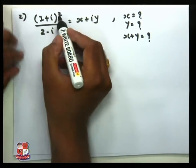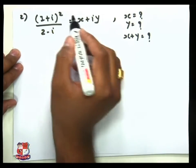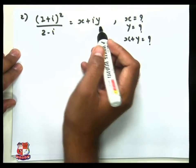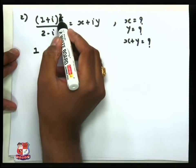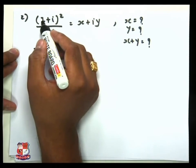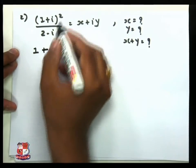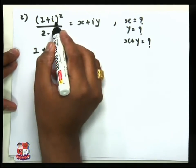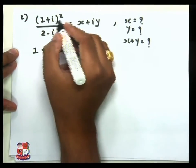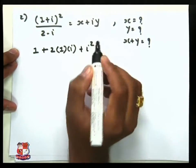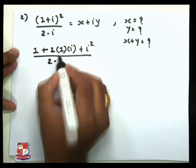This is a complex numbers problem. First we want to remove the square by expanding the numerator using the square rule: (1+i)² = 1² + 2·1·i + i², which gives 1 + 2i + i², divided by (2−i) as it is.